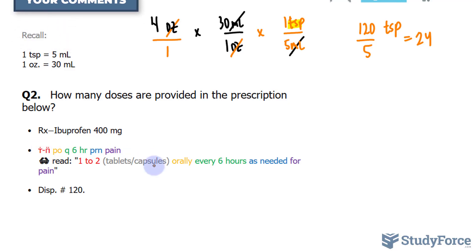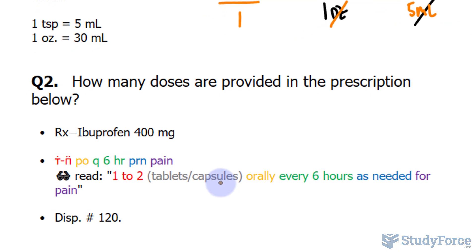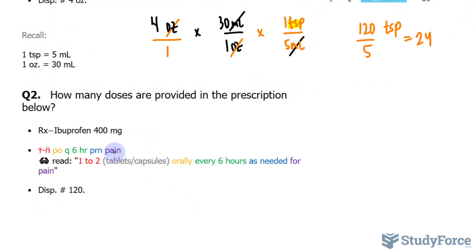And we're also provided with this statement and that reads, one to two tablets or capsules, whatever version of this drug you've been given, orally, every six hours as needed for pain. So PRN represents as needed, while pain represents what it is. And this information is required for us to find how many doses.